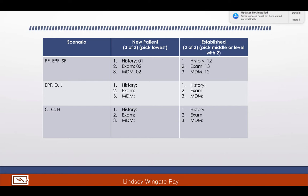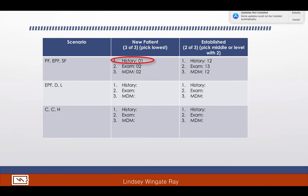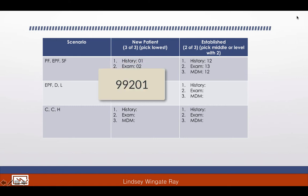Starting with the new patient column: look in your book for problem-focused history — that is 99201, so we put 01 in history. For the exam, expanded problem-focused is 99202, so 02 goes there. For straightforward medical decision making, both 99201 and 99202 qualify — so we always give the highest, which is 02. This is a new patient, so we must pick the lowest because we didn't have that history to meet level two. So we go back to 99201.